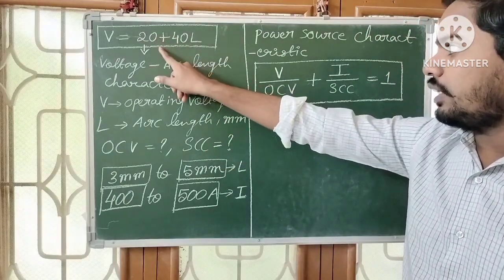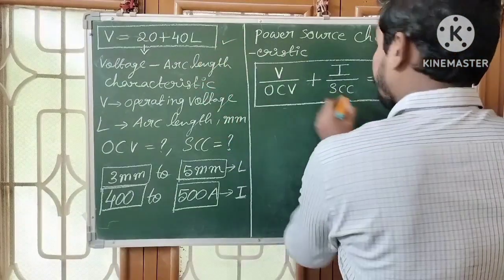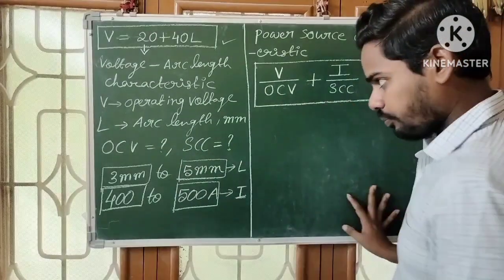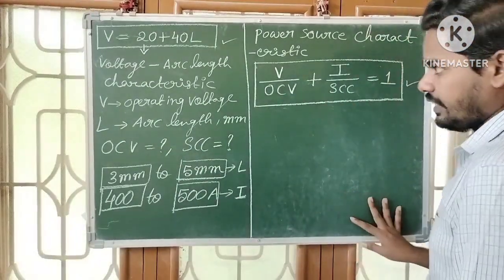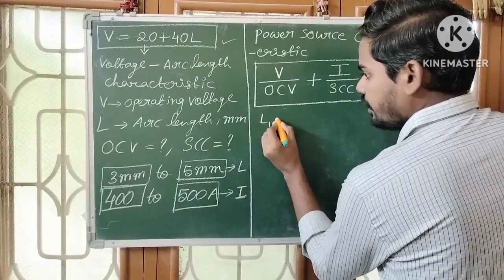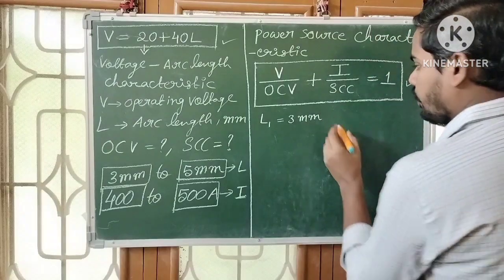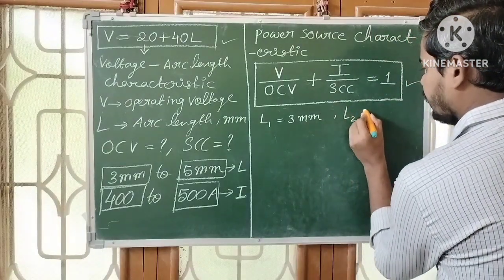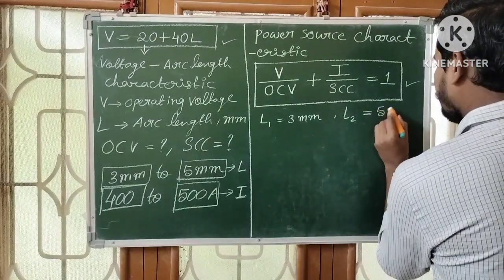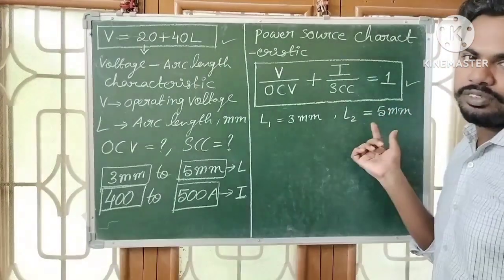Using the voltage arc length characteristic and the power source characteristic — these two equations — we can find OCV and SCC. The minimum arc length is L1 = 3 mm, and the maximum arc length is L2 = 5 mm.